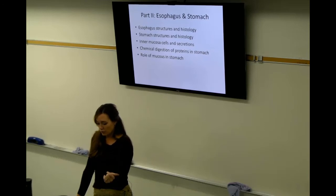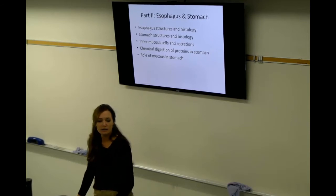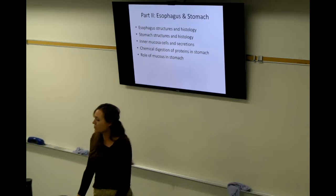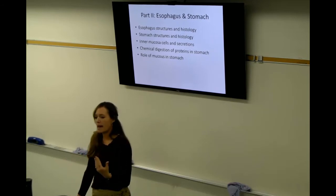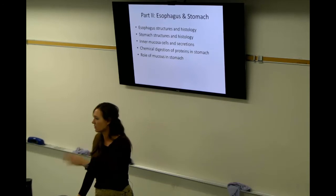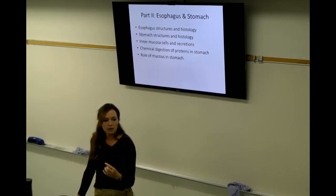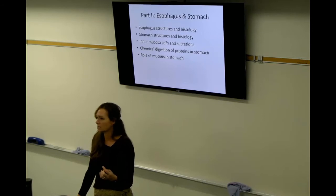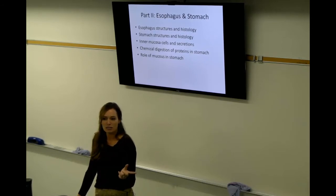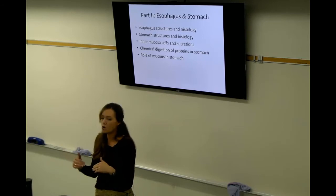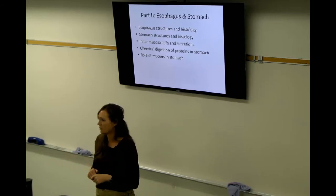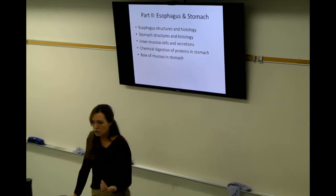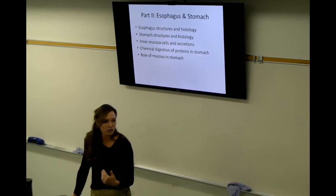Chemical digestion of proteins in the stomach. You have chief cells secreting pepsinogen, you have parietal cells secreting hydrochloric acid. They combine to form pepsin. Additional hydrochloric acid drops the pH so that now that pepsin becomes active and it starts to break those peptide bonds. The role of mucus in the stomach protects ourselves from our own activated pepsin from getting into the wall of our stomach. If you don't have enough mucus in your stomach you're going to have an ulcer because you're going to digest yourself.